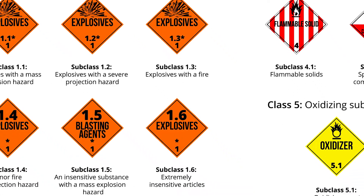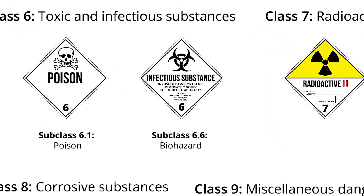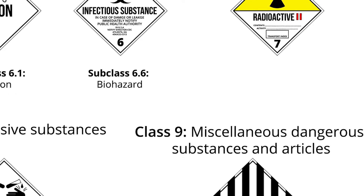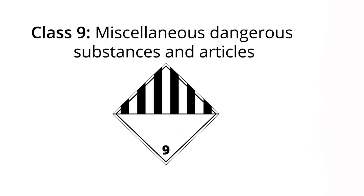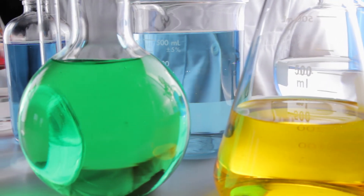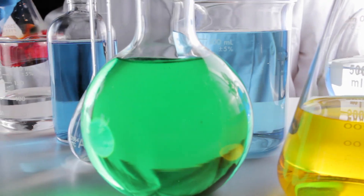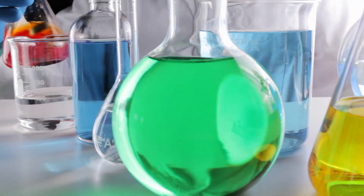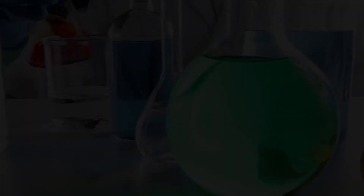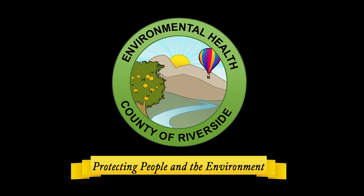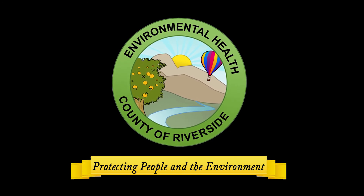If the dangerous material does not quite fit in classes one through eight, then by default it is a class nine substance. Genetically modified or enhanced hazardous materials often fall into this class. For information on extremely hazardous substances and safety data sheets, see part three.